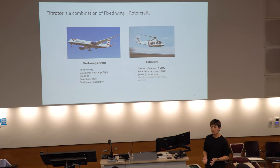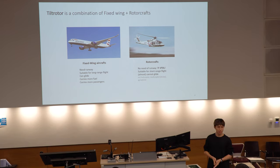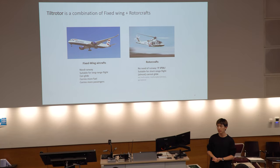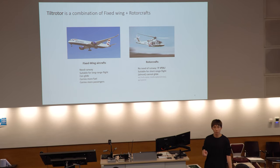In the future, the aircraft we need is a combination of these two: efficient enough to fly for a long distance, but at the same time not requiring any runway. If a fixed-wing aircraft has a different configuration so that it can take off and land vertically, that's the type of aircraft we need. One of those types is called tiltrotor, and they fall under the category called UAM — urban air mobility.